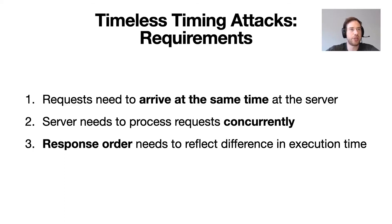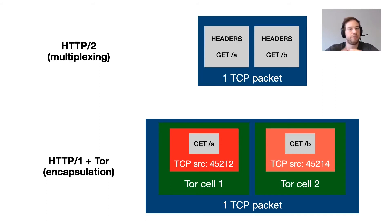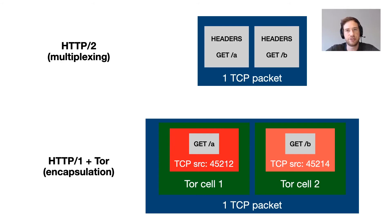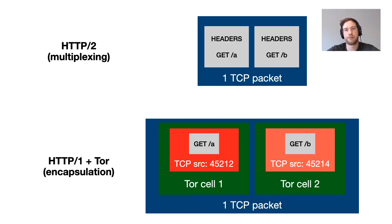For the first requirement, we have two options. Either we can leverage multiplexing, where there are two requests in a single packet that will be multiplexed at the protocol level and then processed simultaneously — in this case we can do that with HTTP/2. The other option is by using a form of encapsulation at the network protocol level. For this, we can abuse Tor: if we create two different TCP connections and send packets over these two different connections, Tor will encapsulate these in two different Tor cells, and two Tor cells can still fit into a single TCP packet.